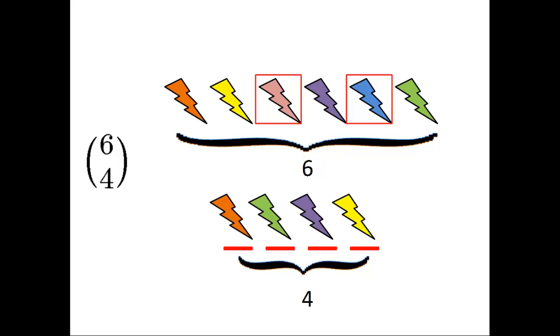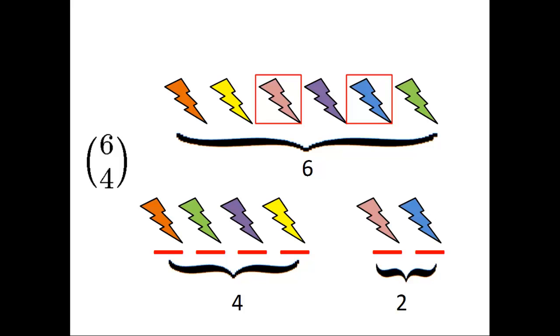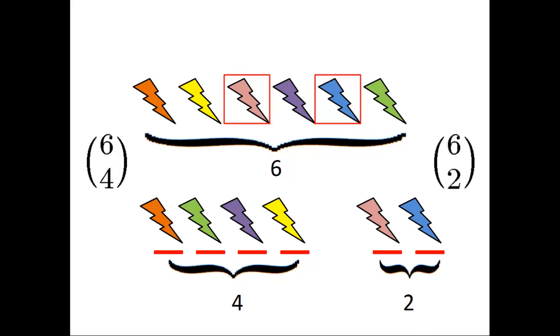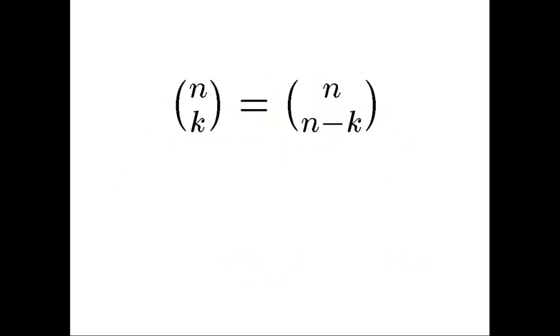Hence, six choose four equals six choose two, and in general, n choose k equals n choose n minus k.